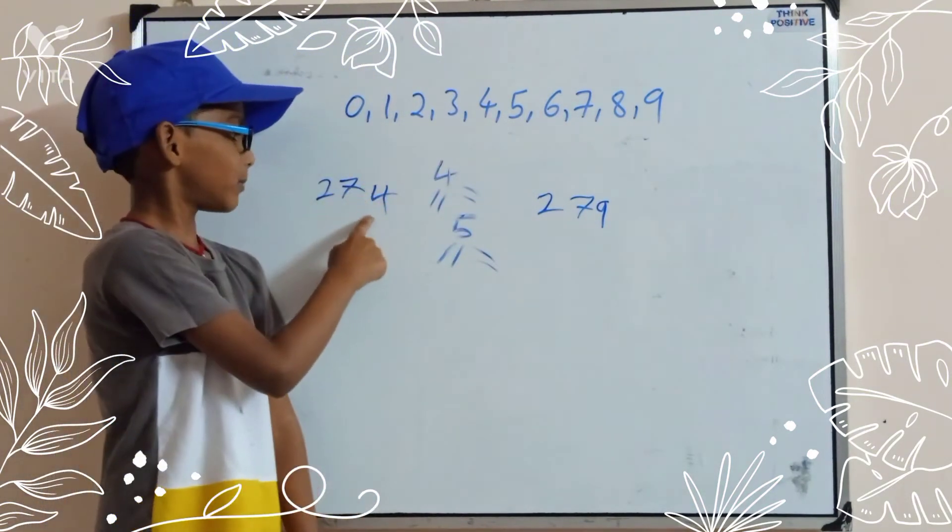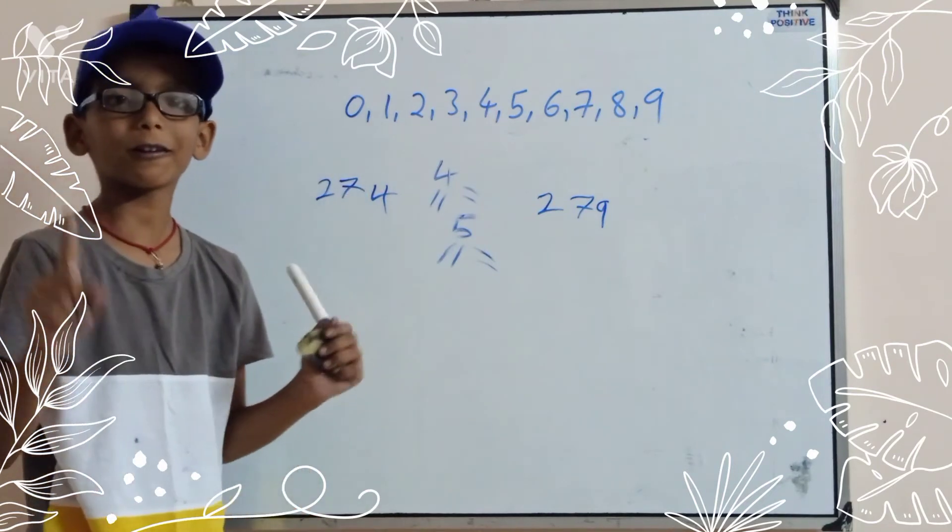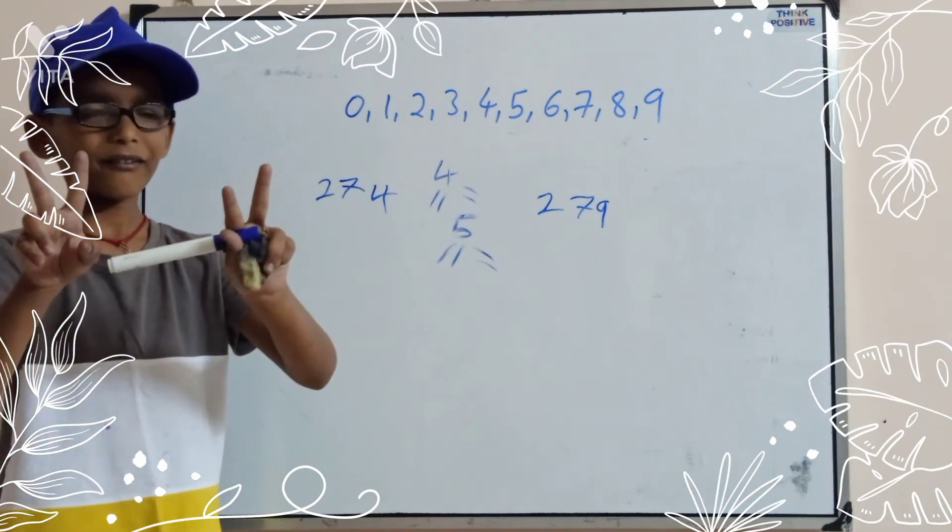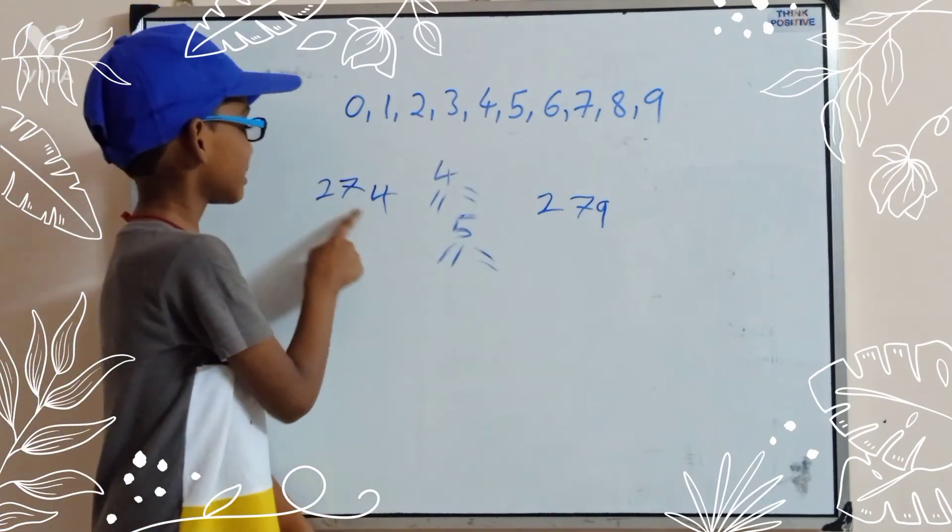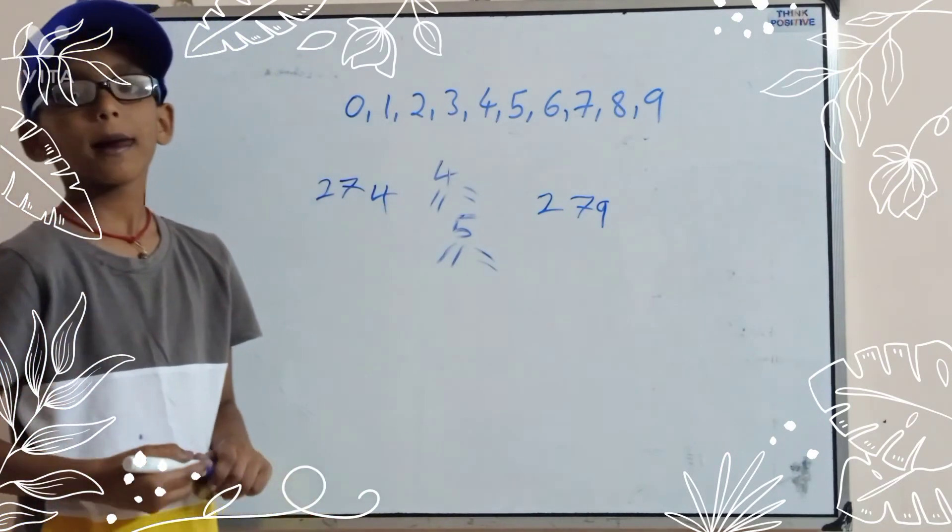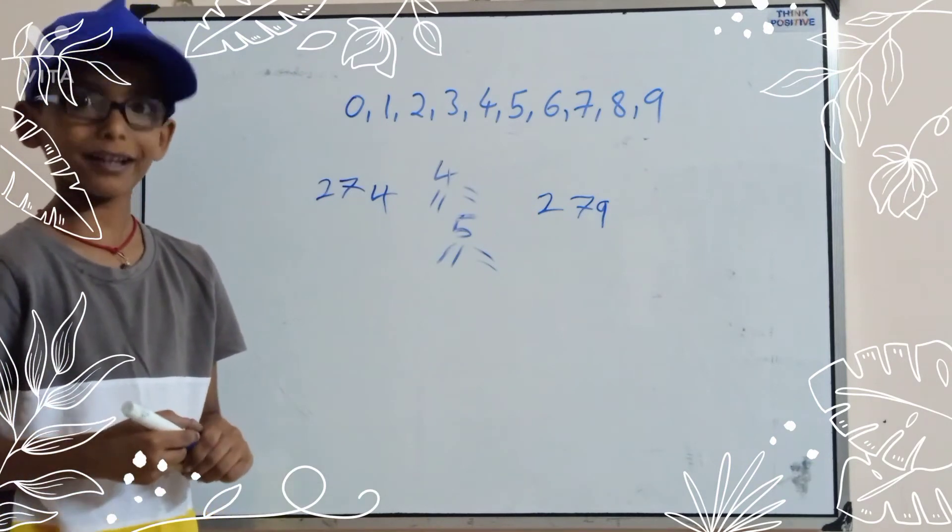Look at 1's place. 1's place is 4. 4 is even. We can share 2, 2. So that's why 274 is even number.